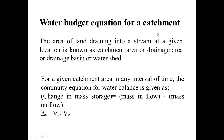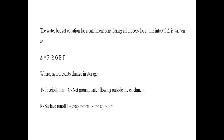This water budget equation for a catchment area is also known as the water balance equation. For a given catchment area, the water budget equation considering all processes for time interval delta t is written as: delta S equals P minus R minus G minus E minus T.